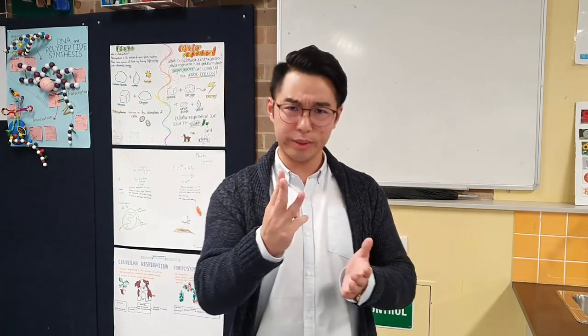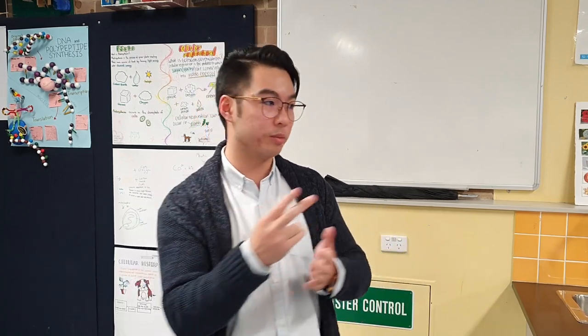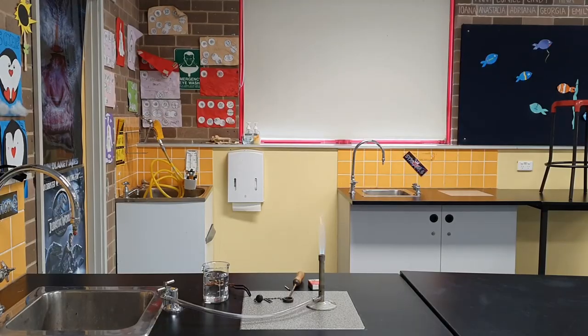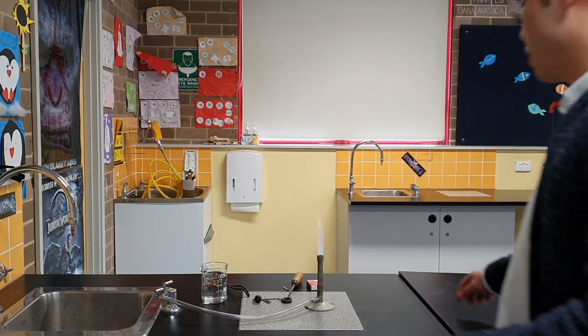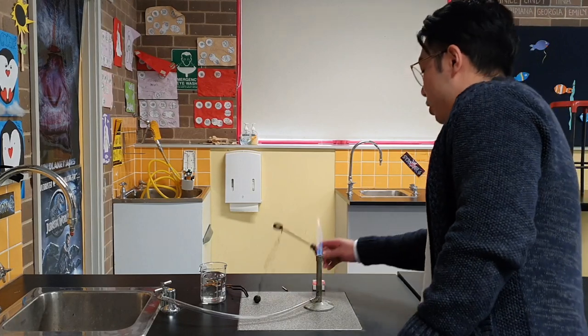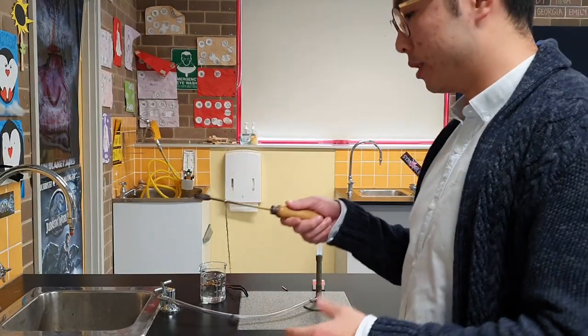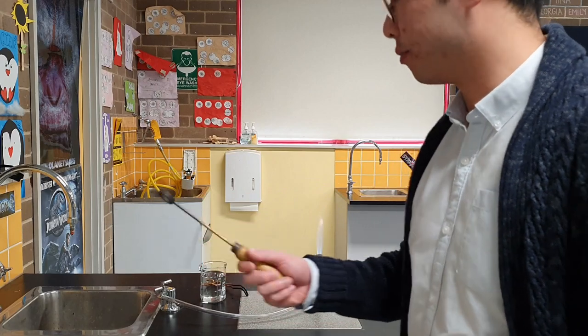There are three states of matter: solids, liquids, and gases. There's a fourth one, plasma, which we won't be going into. In this lesson there are going to be two experiments that I'll be demonstrating to show you this particle theory of matter. So this first demonstration, I'll be demonstrating the behaviour of particles in a solid, and what happens to these particles when it gets heated up.